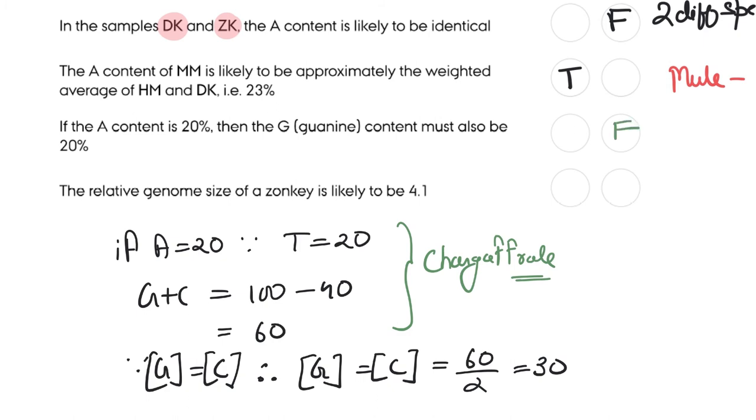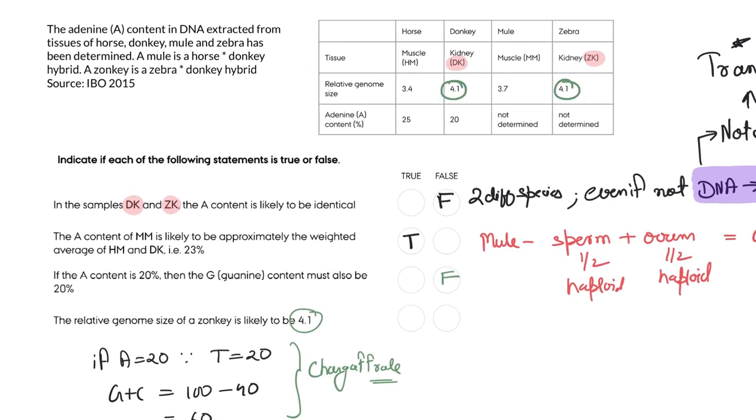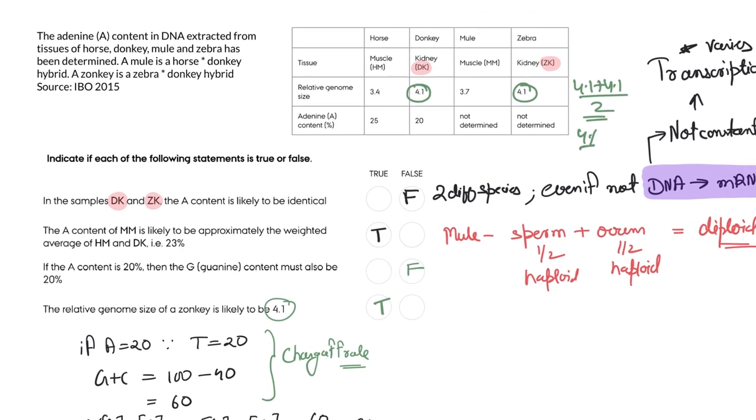The last and perhaps the easiest question: the relative genome size of a zonkey is likely to be 4.1. You can see 4.1, 4.1—you take the average, that's 4.1. So this was an easy statement.